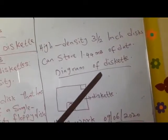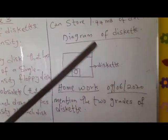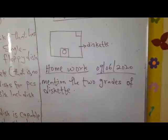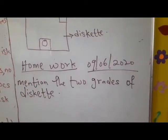Then here is the diagram of what? Diskette. Here is what? Diagram of what? Diskette. So, your homework said, mention the two grades of what? Diskette.